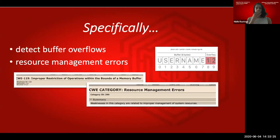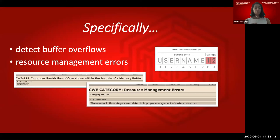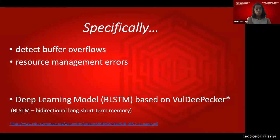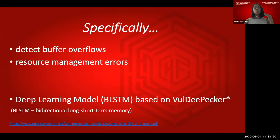To get a bit more focused — we won't be talking about all kinds of vulnerabilities today; that's great future work. For today, we'll be focusing on detecting buffer overflows and resource management errors, both of which have a category in CVE, so we were also able to gather data from the CVE website. The deep learning model we'll be discussing is called the bidirectional LSTM model — LSTM stands for Long Short-Term Memory.